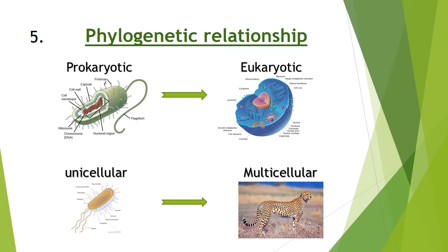To repeat: number one, complexity of cell structure; number two, complexity of organisms; number three, mode of nutrition; number four, lifestyle; number five, phylogenetic relationship.